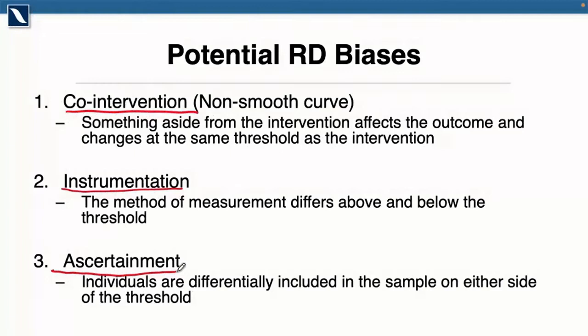These are three things you need to be aware of. A concrete co-intervention example: folks often use retirement as an intervention for studying mortality. The trouble is that all sorts of things happen at age 65 — people retire, but they also become eligible for a lot of federal benefits and drug coverage in Ontario. There are many things that change at that point, so you need to be particularly aware of what exactly is changing at those thresholds.